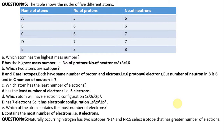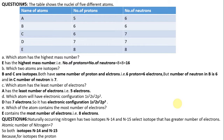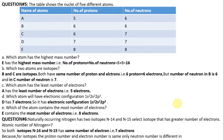Naturally occurring nitrogen has two isotopes, N-14 and N-15. Which isotope has a greater number of electrons? The atomic number of nitrogen is 7, so both isotopes N-14 and N-15 have the same number of electrons, that is 7 electrons, because isotopes have the same number of protons and the number of electrons equals the number of protons. Atomic number 7 means 7 electrons.